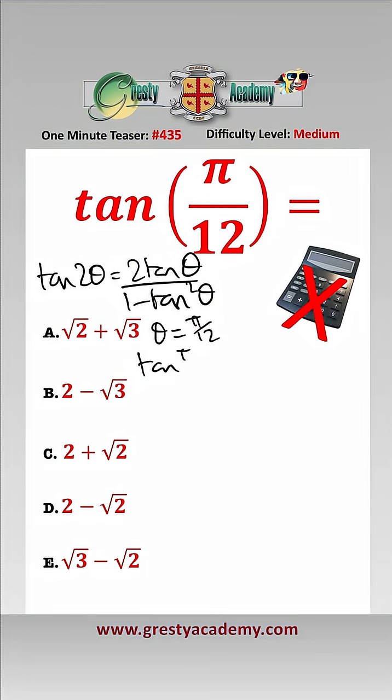So therefore we've got tan of π over 6, which is a known tangent, which is 1 over root 3, equals 2 tan of π over 12 over 1 minus tan squared π over 12.